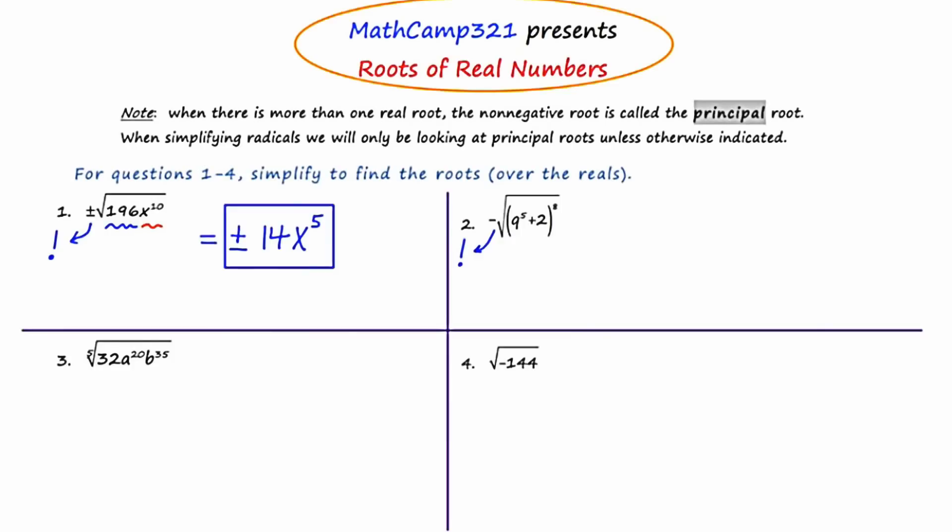Now in number two, it's just the opposite of — not plus or minus, just the minus. What's also different in number two is that what we have under the radical is a chunk. So we have the opposite of the square root of chunk to the eighth. The square root of chunk to the eighth is chunk to the fourth — or specifically, q to the fifth plus two to the fourth, which is chunk to the fourth.